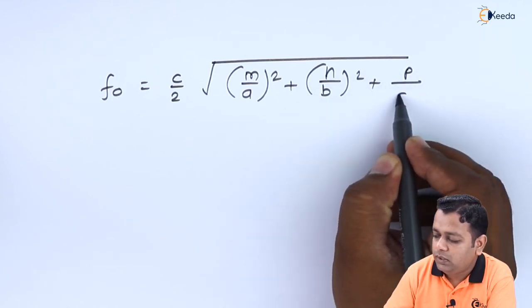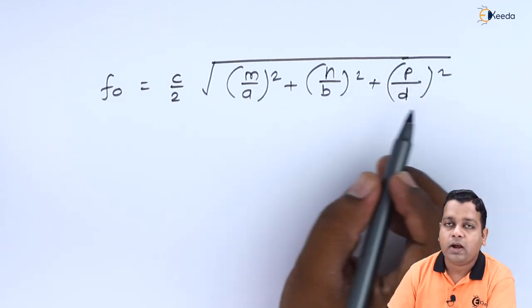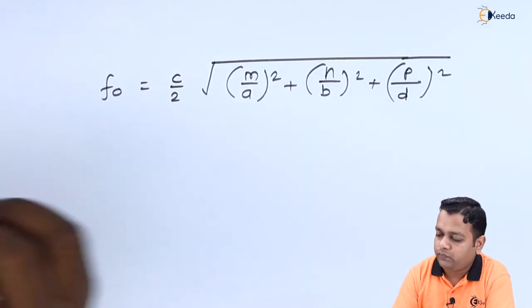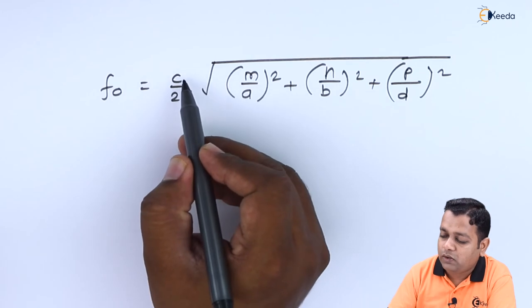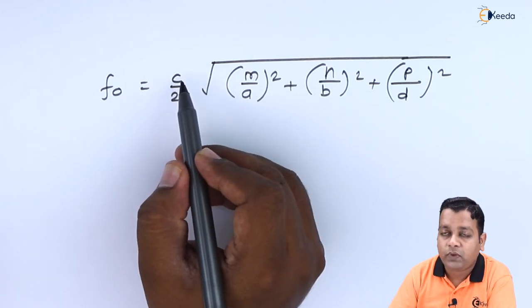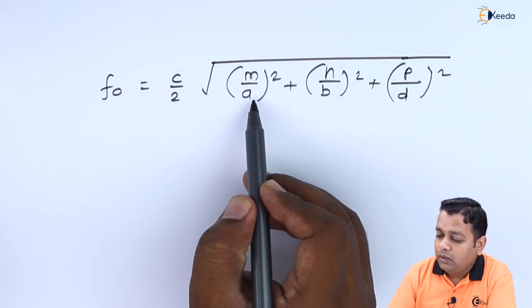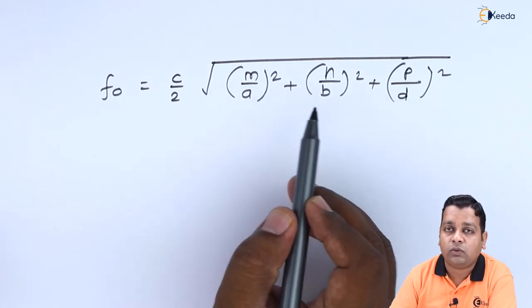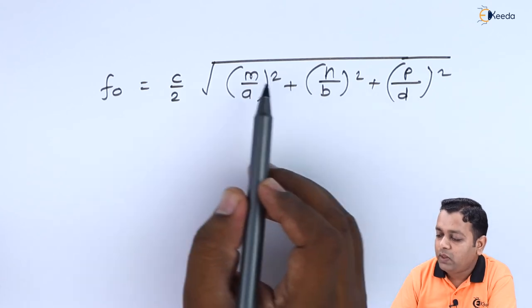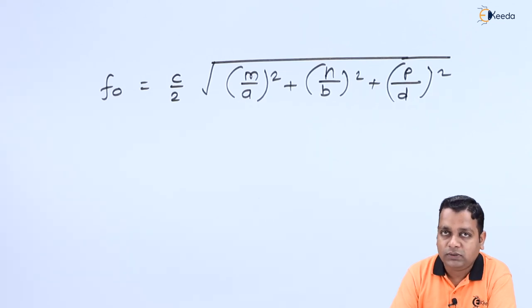So addition of the square ratios is there inside the square root in multiplication to the c by 2, where c is the velocity of the light into the free space or air medium having the constant value 3 into 10 raised to power 8 meter per second. Small a, small b, and small d are the generalized dimensions with respect to the rectangular cavity resonator basically, and small m, small n, and small p hold the integer values associated with the propagating field vectors inside the cavity resonator.